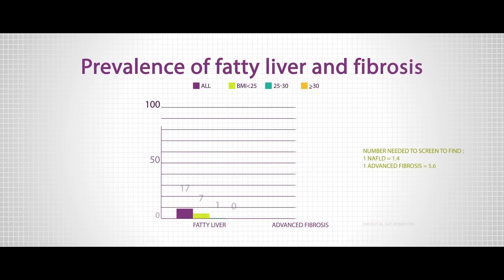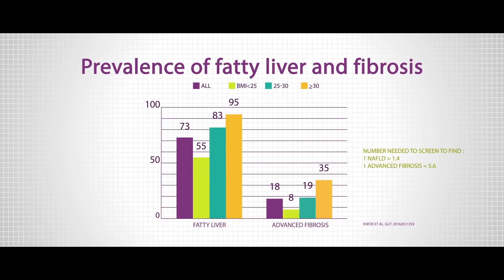Overall, 73% of the patients had high CAP values, suggestive of fatty liver. This figure was what we expected from a diabetic population. More importantly, high liver stiffness, suggestive of advanced fibrosis, was observed in 18% of the population.